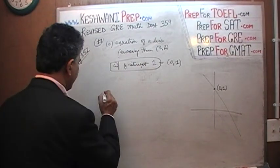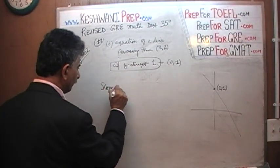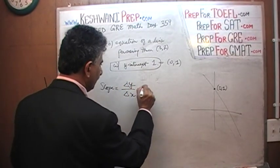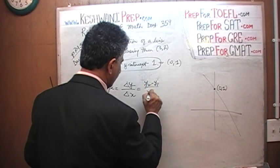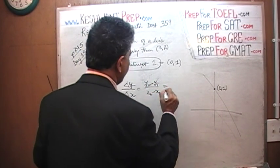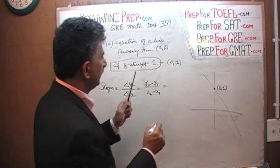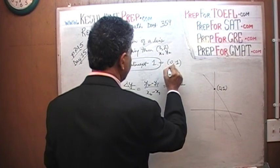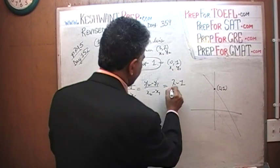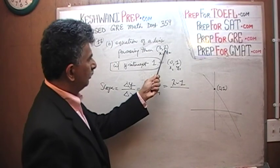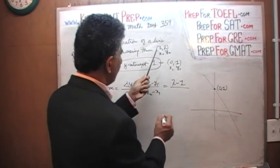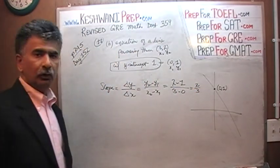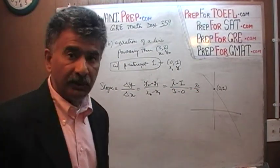The slope of this line is the change in Y over the change in X, which is Y2 minus Y1 over X2 minus X1. Let (3, 2) be (X2, Y2) and (0, 1) be (X1, Y1). So slope equals 2 minus 1 over 3 minus 0, which gives us 2/3. The slope is 2/3.